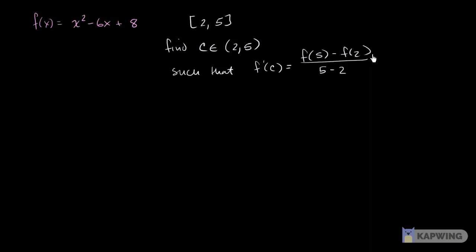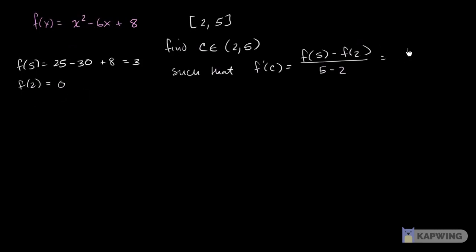To do that, let's calculate what that average slope has to be, then take the derivative and set them equal. f of 5 equals 25 minus 30 plus 8, so that's negative 5 plus 8, which equals 3. f of 2 equals 4 minus 12 plus 8, which equals 0. So this is 3 over 3, which equals 1. So f prime of c needs to equal 1.